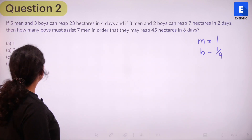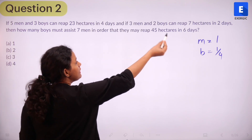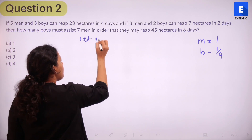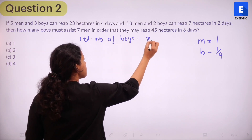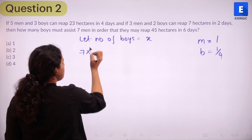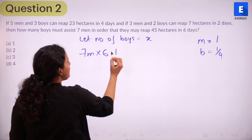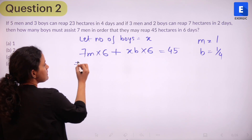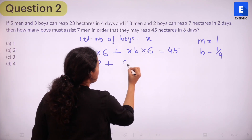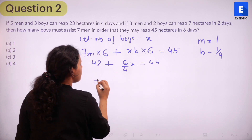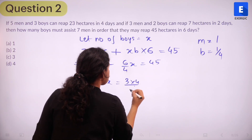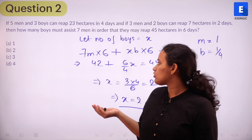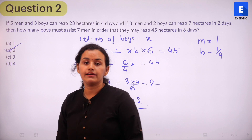Now, what do we want to find? How many boys must assist seven men to reap 45 hectares in six days? Let the number of boys be x. Seven men working for six days contribute 7 × 6 × M = 42, and x boys working for six days contribute 6B × x = (6/4)x. So 42 + (6/4)x = 45, which simplifies to x = 2. The answer is 2 boys, which corresponds to option B.